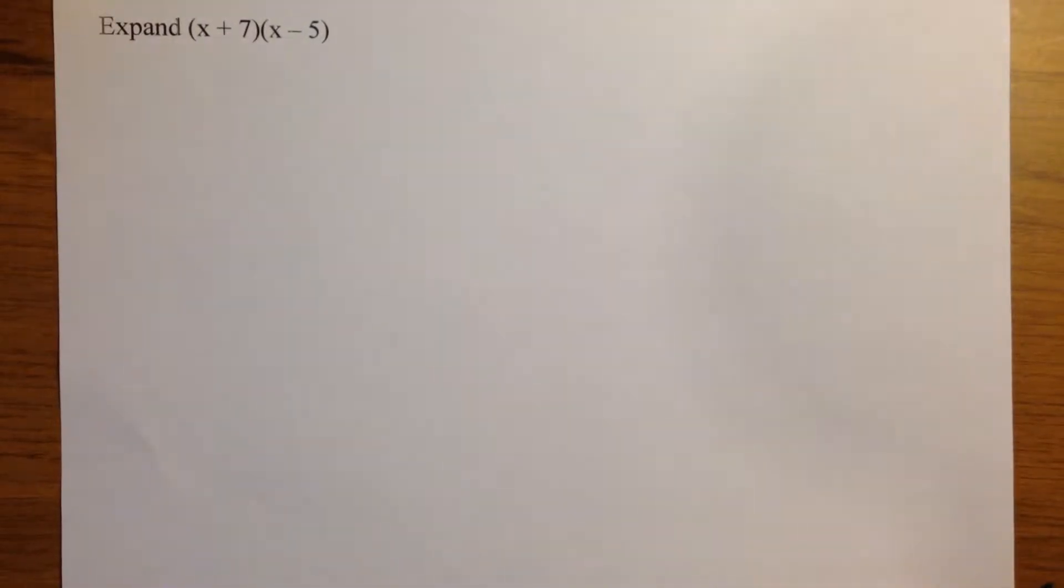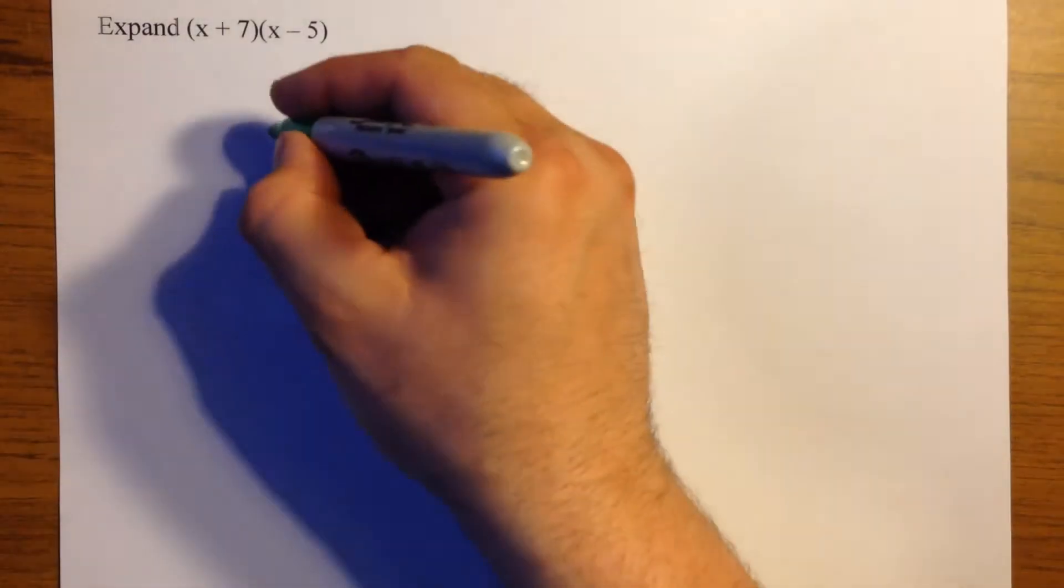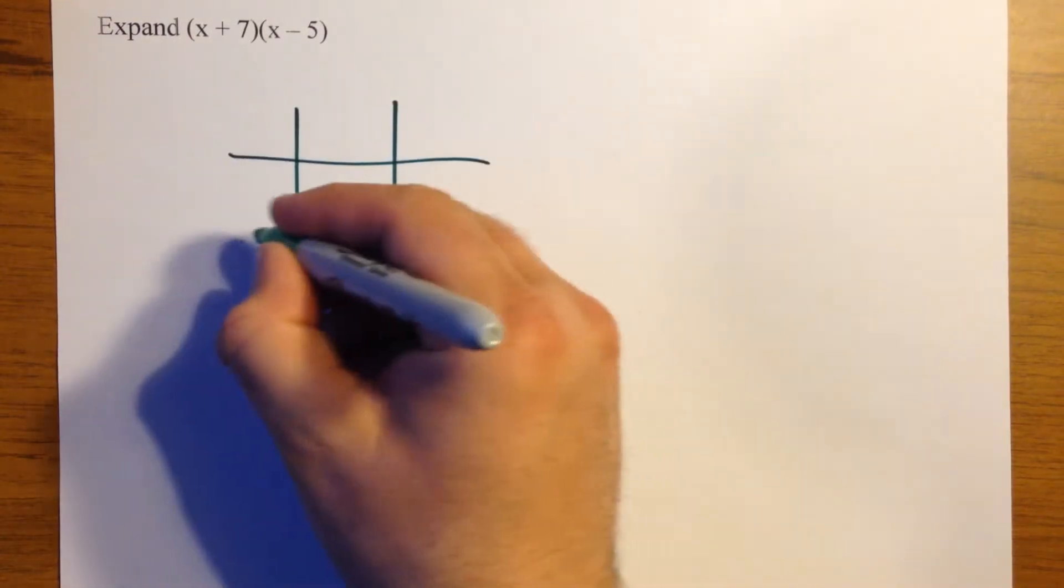OK, this is the second video in the series looking at expanding double brackets. And again we're going to use the noughts and crosses grid method. So we'll start by drawing the grid.